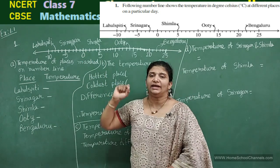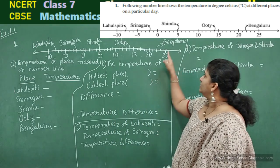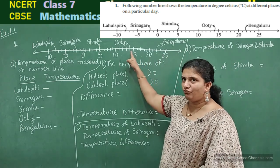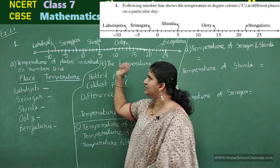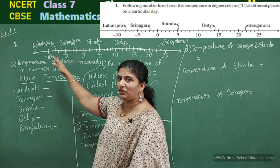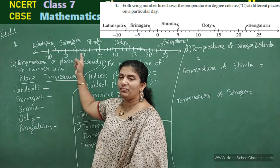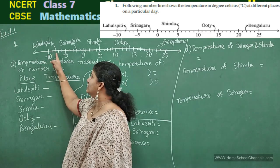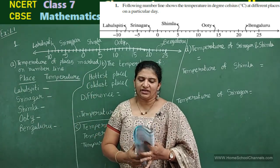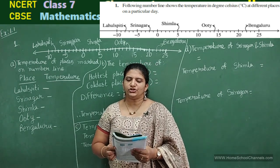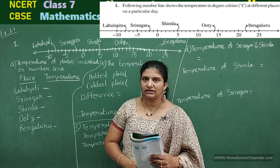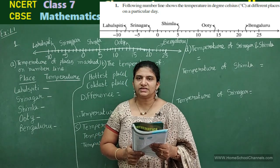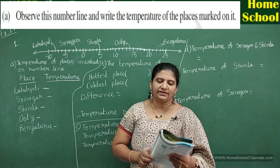Observe the number line — the arrow mark is not exactly at a number, so we need to identify that number. Bengaluru's temperature is 22 degrees Celsius. Ooty: 14 degrees Celsius. Shimla: 5 degrees Celsius. Srinagar: 0 — this side is negative, so minus 1, minus 2 — Srinagar's temperature is minus 2 degrees Celsius. The question reads: the following number line shows the temperature in degrees Celsius at different places on a particular day. Observe and write the temperature of the places marked on it.